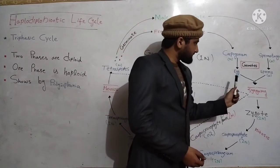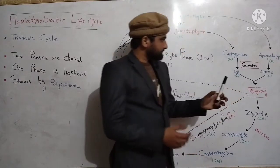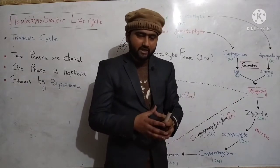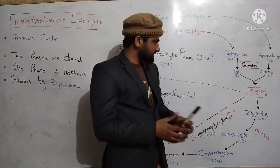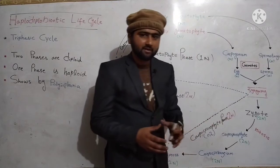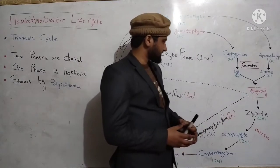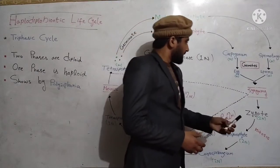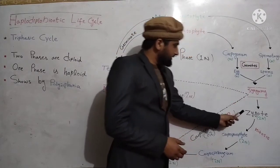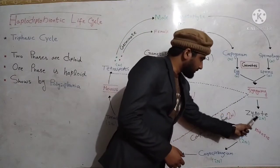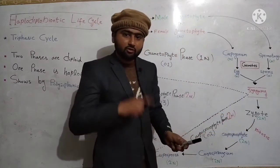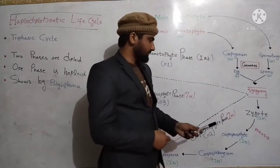Eggs and sperms combine with each other in a process called syngamy. Syngamy is the fusion of gametes, and syngamy results in the formation of a diploid zygote.